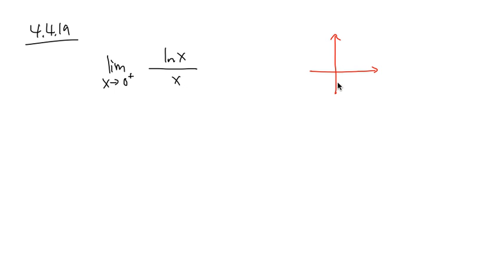So here is the graph of ln(x), it's going to look like this. And as you can see, when x is approaching 0 plus—that means 0 from the right-hand side—this is technically going straight down.